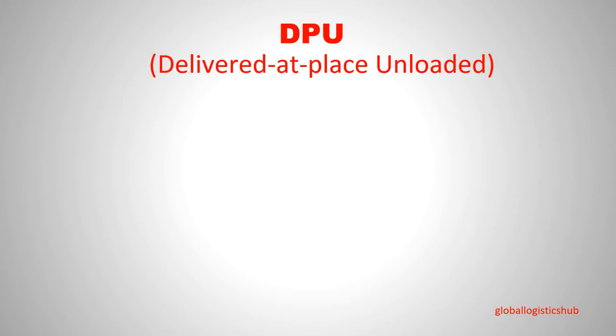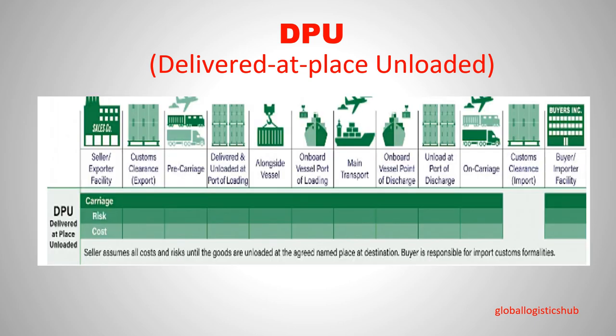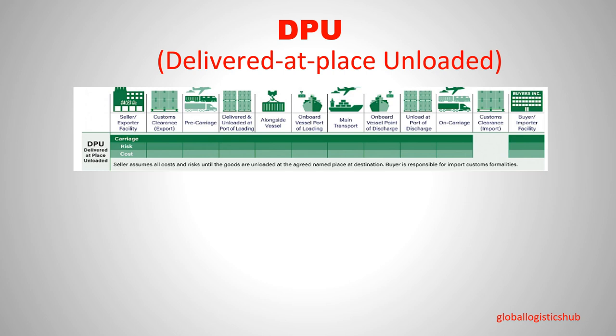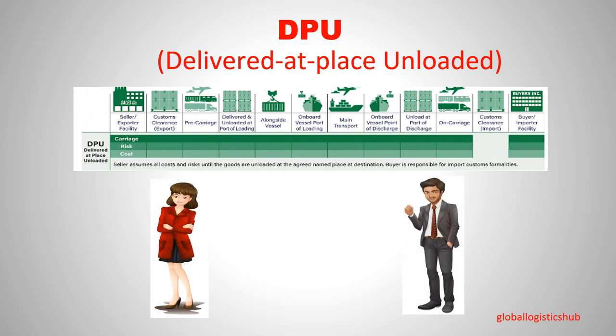Incoterm number six is DPU, which stands for Delivered at Place Unloaded. In DPU, the seller is responsible for all costs and risks until the goods are delivered to the named destination, which is usually close to the buyer. DPU is the only Incoterm rule that requires the seller to unload goods at the place of destination. Risk transfers from seller to buyer at the place of unloading. The buyer is responsible for import clearance procedures. Both parties are not obligated to obtain an insurance policy, but it is highly recommended.